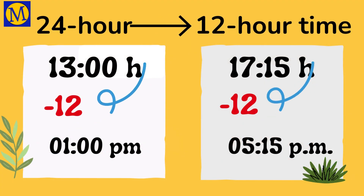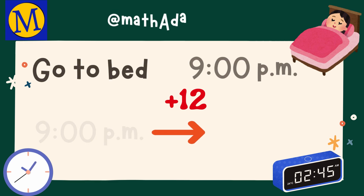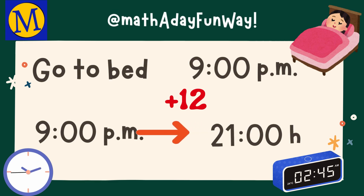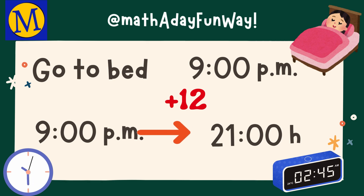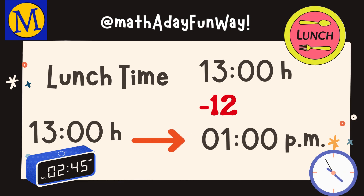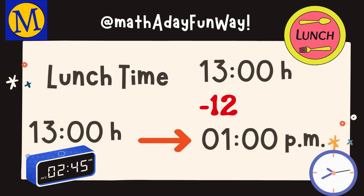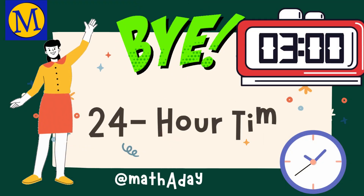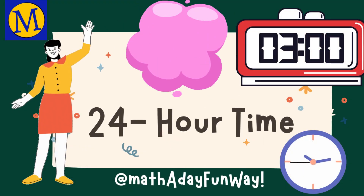So, bedtime at 9 p.m. is 2100H. And lunch time at 1300H is 1 p.m. That was all about 24-hour clock time. Bye!